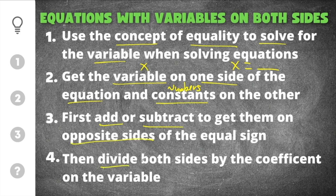Then you will divide by the coefficient on the variable. For example, if we had 7x, 7 is the coefficient on the x, so this is what you have to divide by.